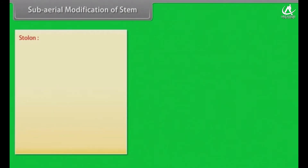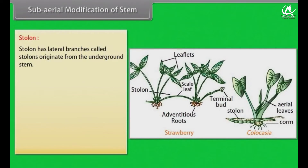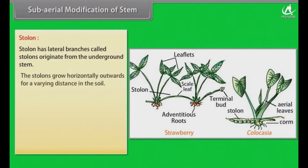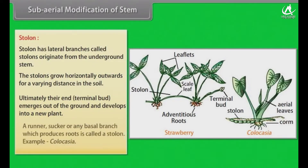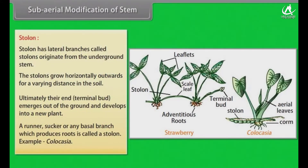Stolons are lateral branches that originate from the underground stem and grow horizontally outwards for a varying distance in the soil. Ultimately their terminal bud emerges out of the ground and develops into a new plant. A runner, sucker, or any basal branch which produces roots is called a stolon. Example: Colocasia.